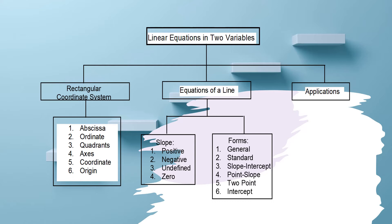We have here the graphic organizer of our topic for this week. Our main topic will be about linear equations in two variables. Its subtopics will be: the rectangular coordinate system, the equation of a line, and its application. Under the rectangular coordinate system, we have six parts. For the equation of a line, we have the slope and its forms.